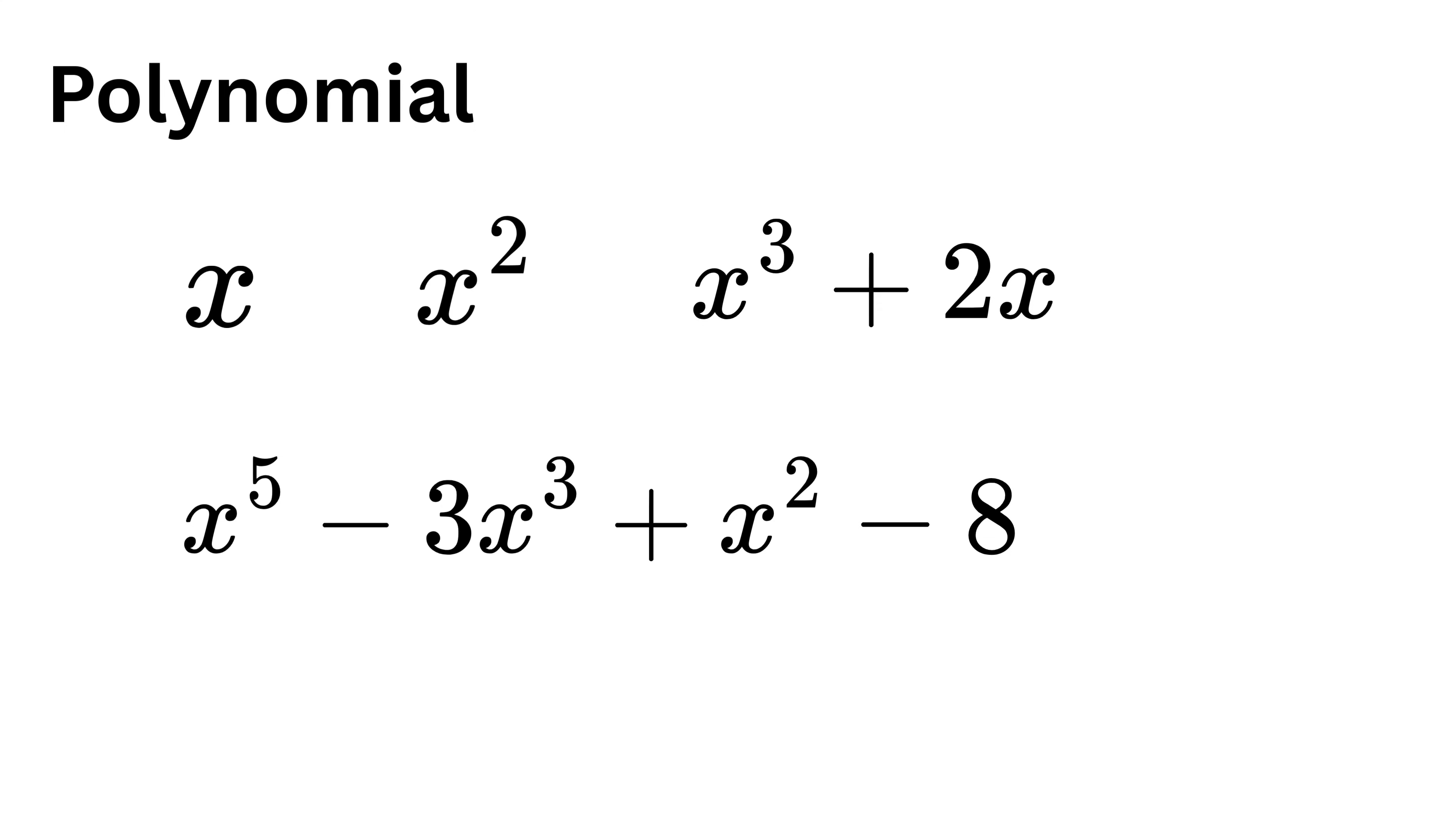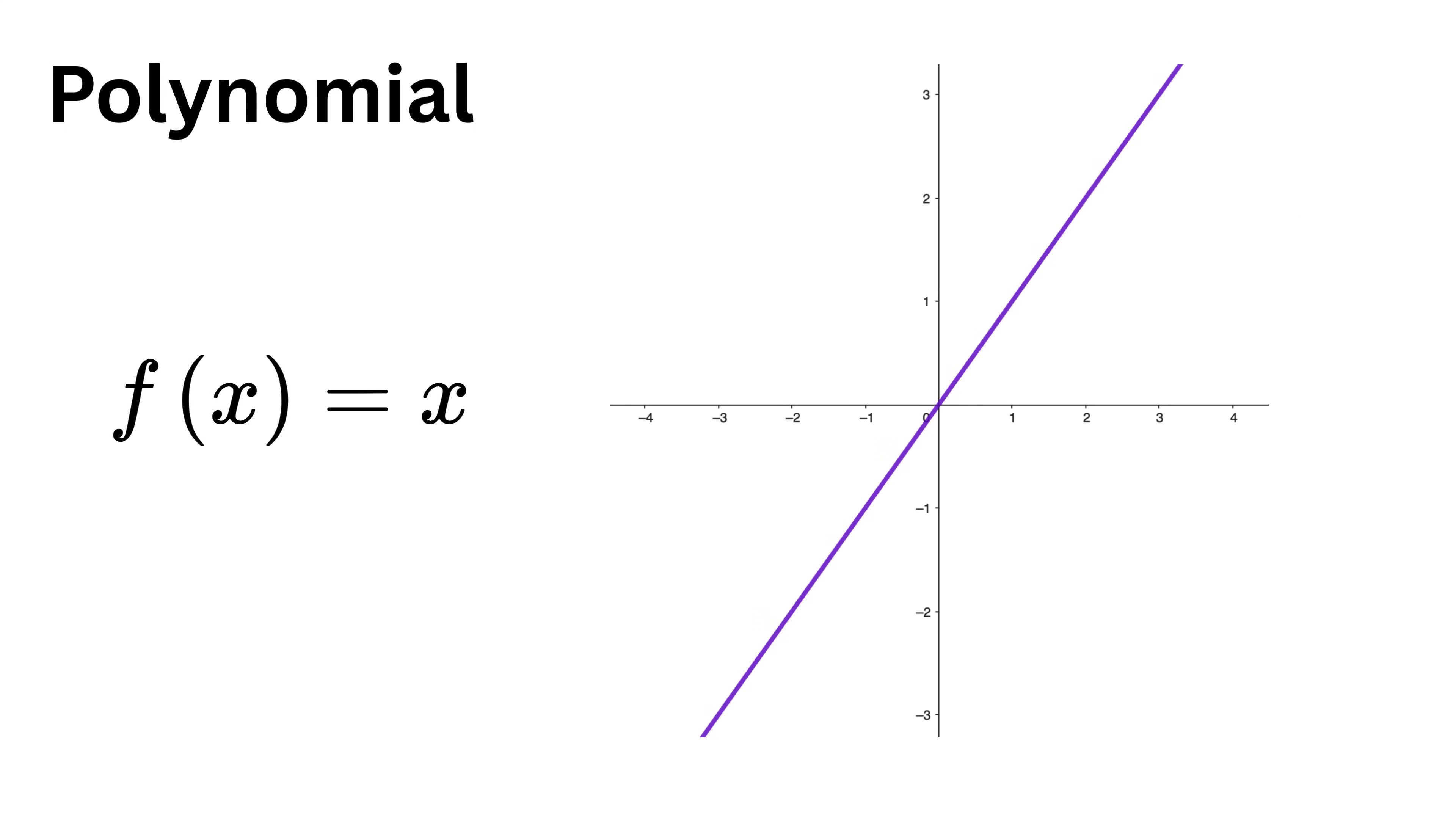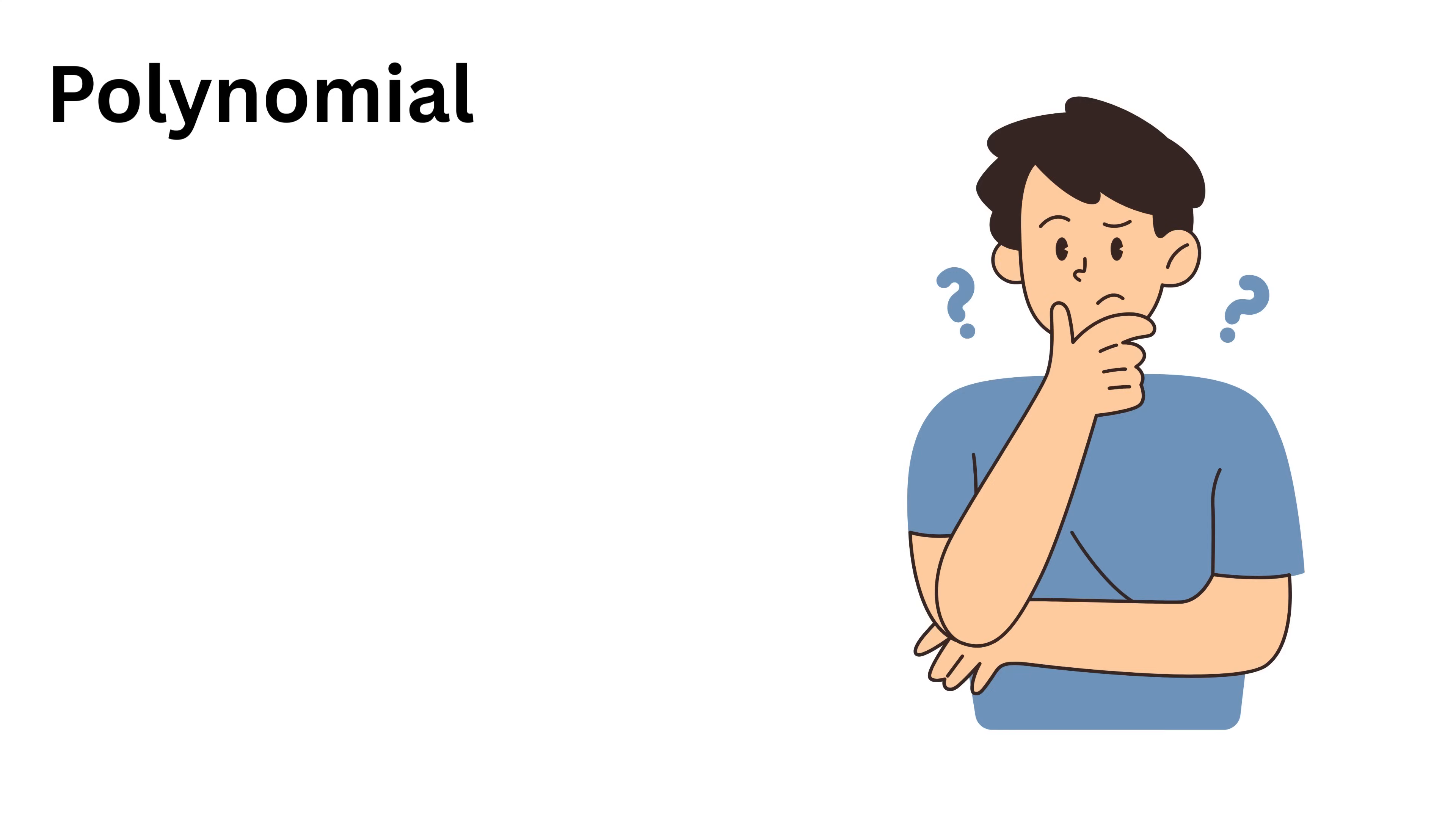If you plot just x, it's a straight line going through the origin slanting upwards. If you plot x², it's a U-shaped curve symmetric around the vertical axis. x³ gives you a curve that dips and then rises. So these are simple smooth shapes.